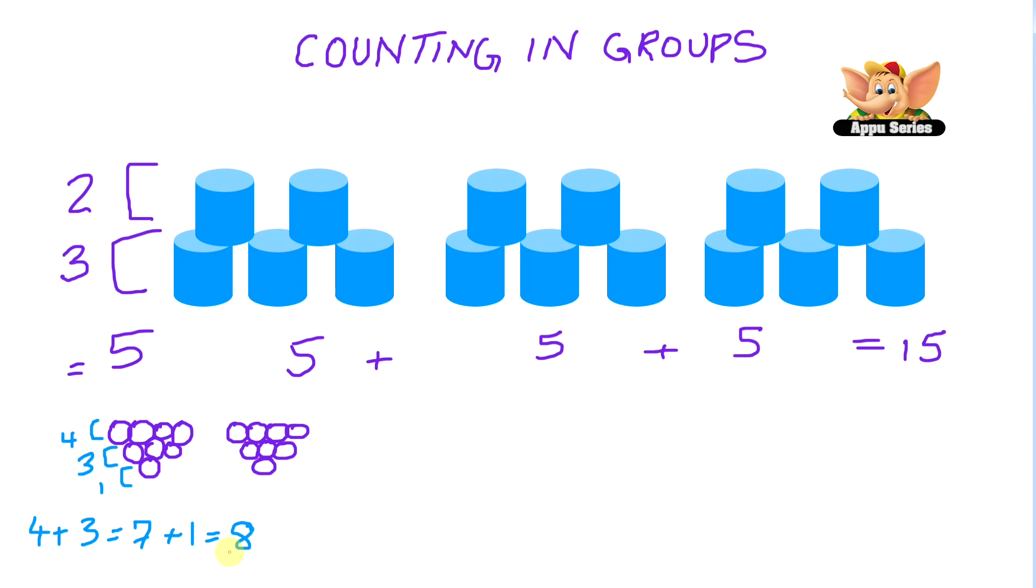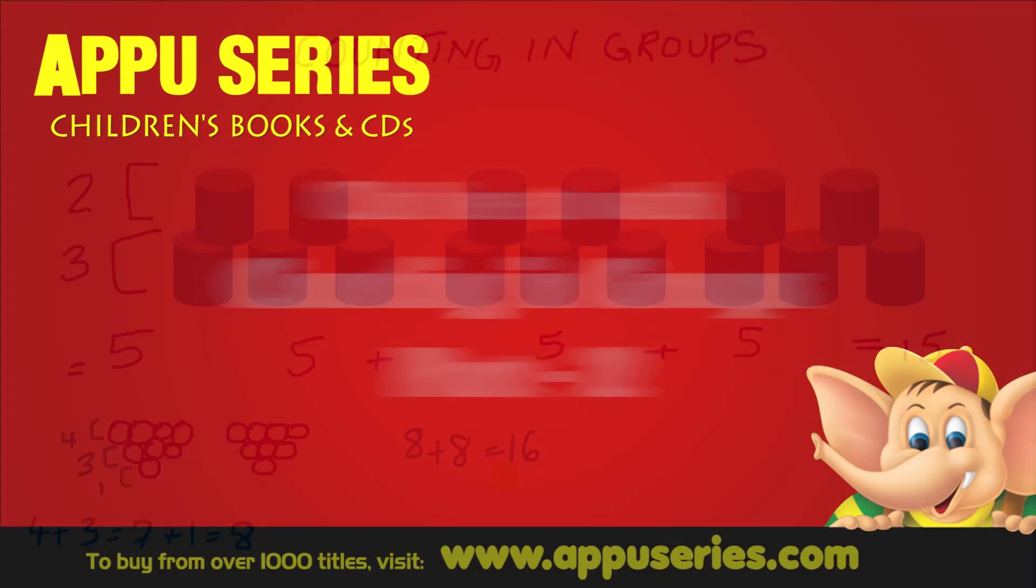Now, how many grapes do we have here? We know this one, this first grape is eight, and the second bunch is also eight. So that's eight plus eight equals sixteen. You got that, right?